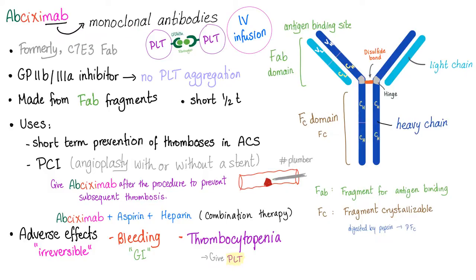Since it's an antibody, we literally made it from a piece of an antibody called the Fab domain, which is near the antigen binding site. If this is your antibody — the heavy chain is dark blue, the light chain is light blue — here you have a hinge region, and here you have a disulfide bond. This is the antigen binding site, which binds to the cell. This is the Fab domain, and this is the Fc domain.